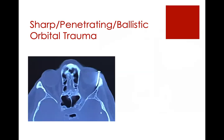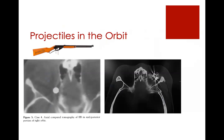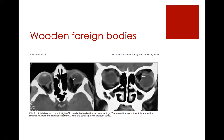Moving on to penetrating trauma in the orbit. BB guns lead to BBs in the orbit pretty commonly — anyone with a BB gun should use eye protection. A BB in the orbit doesn't necessarily need to be removed, but organic matter definitely needs to be removed. Wood can be particularly tricky because it can look like air on a CT. So you have to be really suspicious — sometimes it's just an air bubble that doesn't quite have the right shape. Air shouldn't influence the shape of the globe, so you have to have a high index of suspicion.